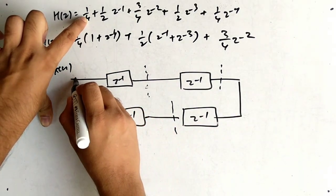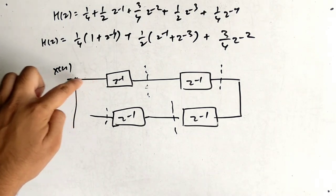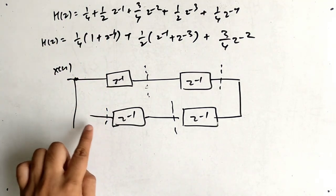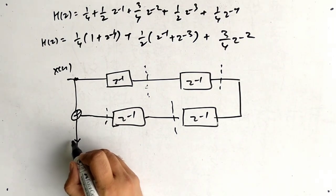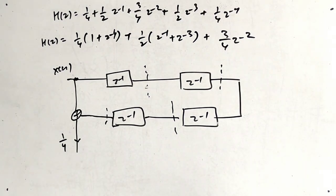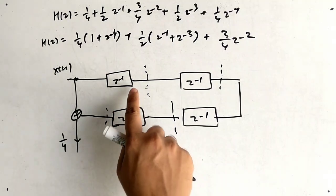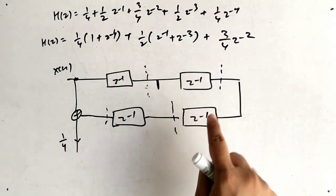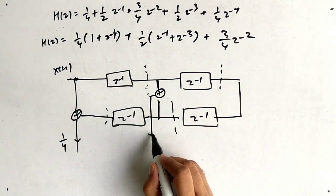Start with x(n). The constant term is taken directly. Club it with the z⁻⁴ area using an adder, then apply the common multiplier 1/4 — one multiplier saved. Next, take the z⁻¹ area and the z⁻³ area, club them with an adder, then apply multiplier 1/2.